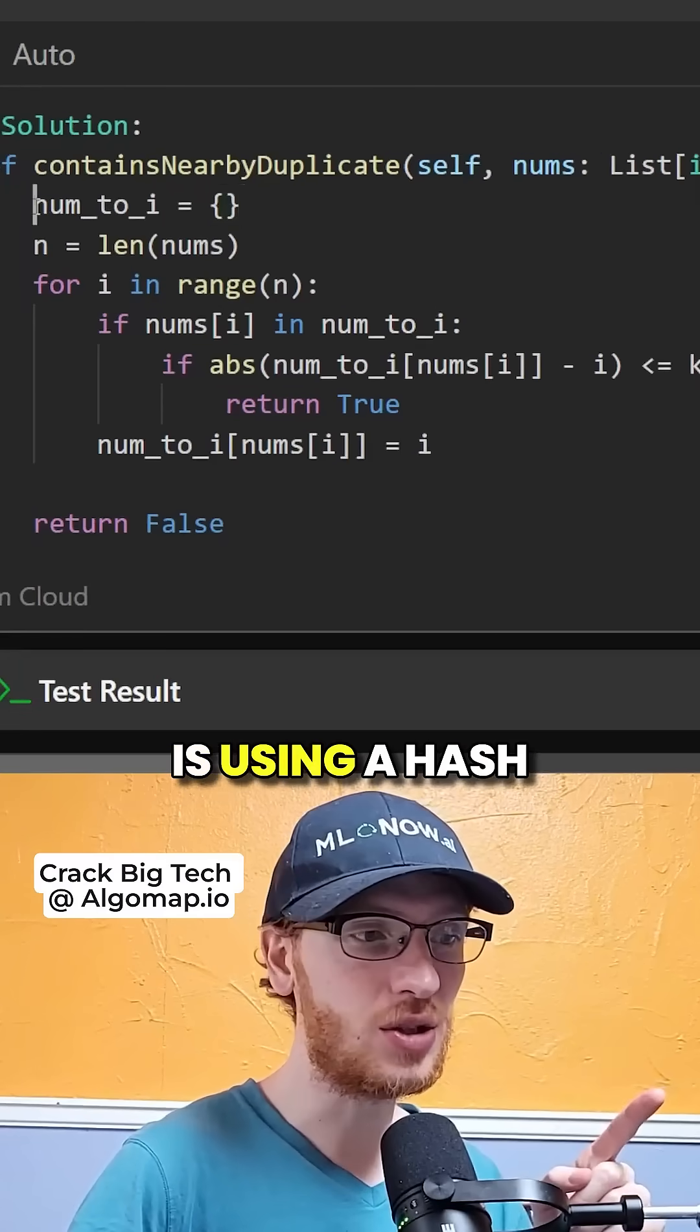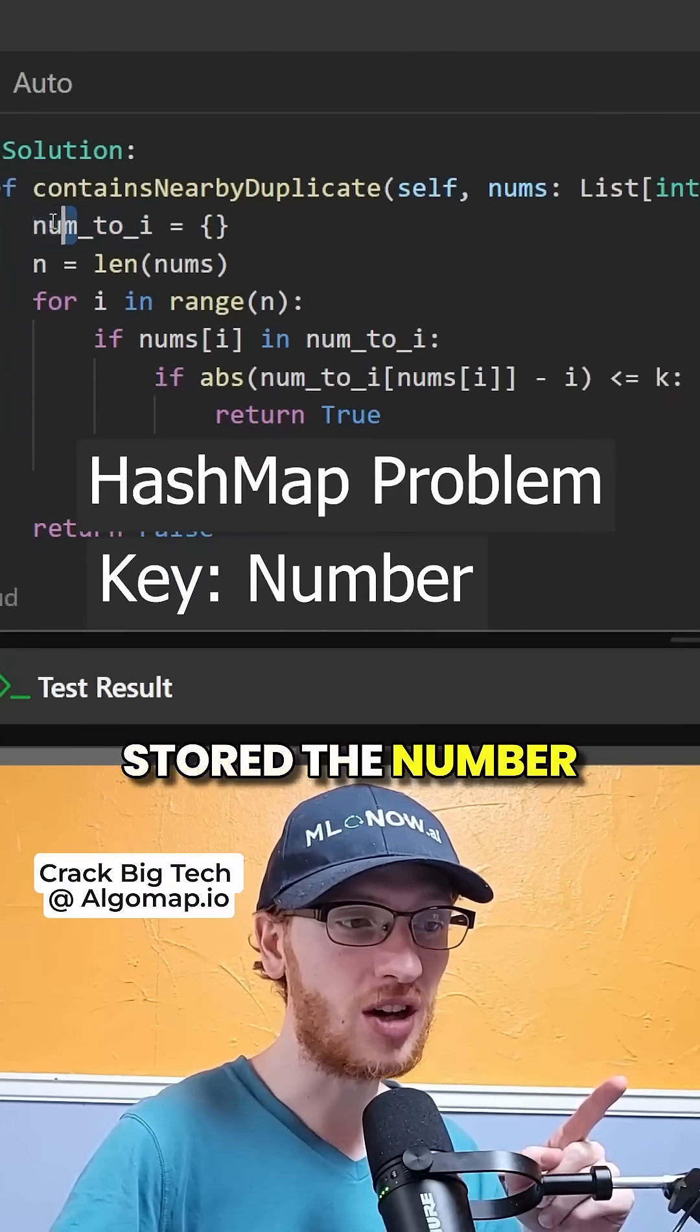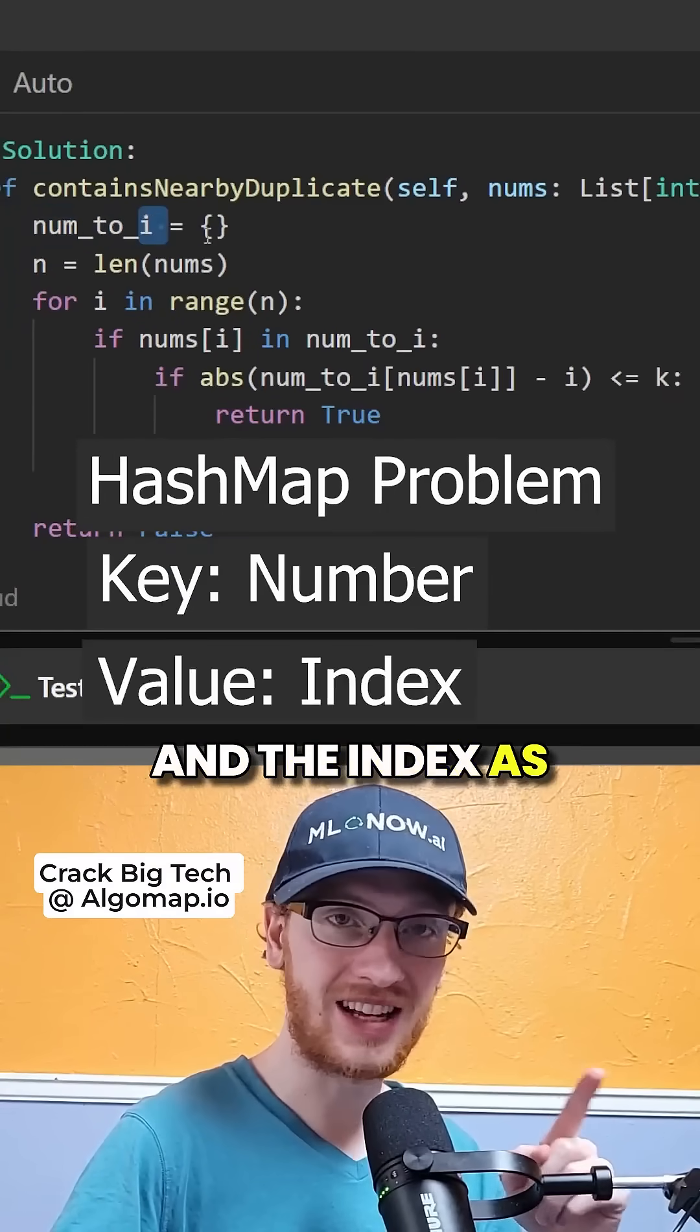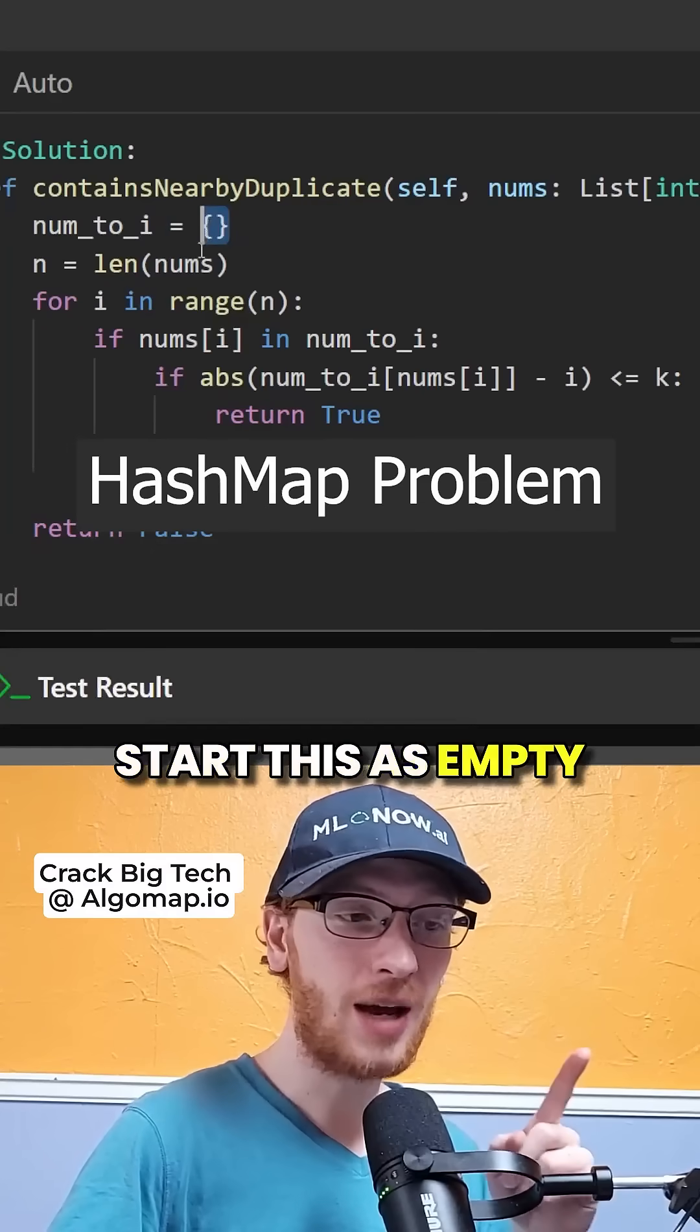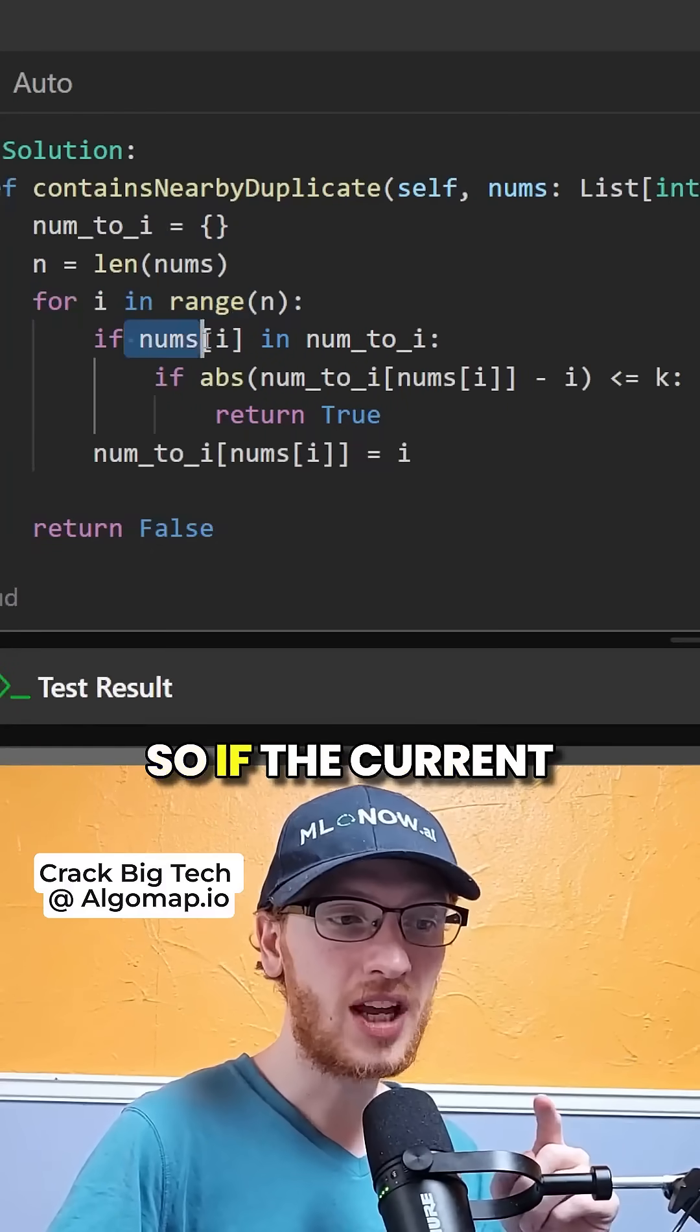The trick to doing this efficiently is using a hash map where we store the number as the key and the index as the value. But we want to start this as empty and build that up as we go through the numbers.